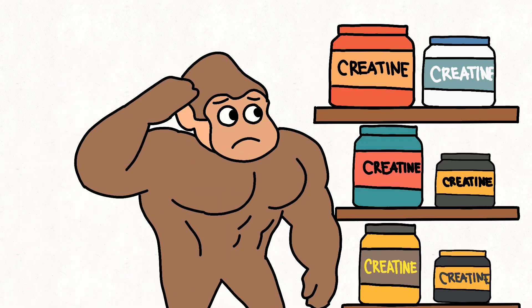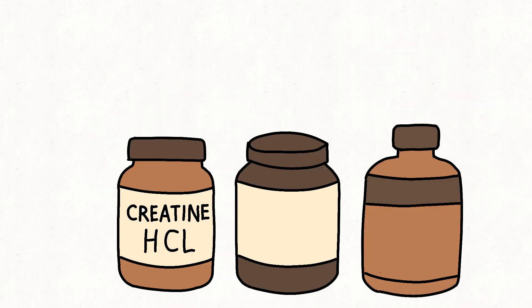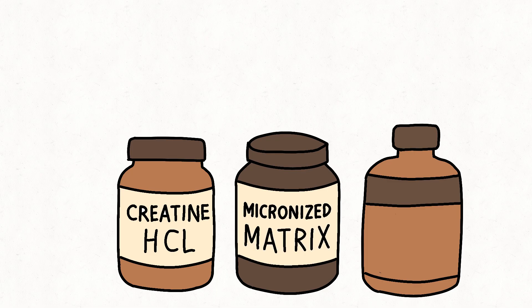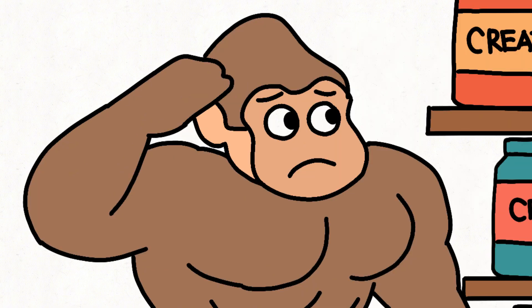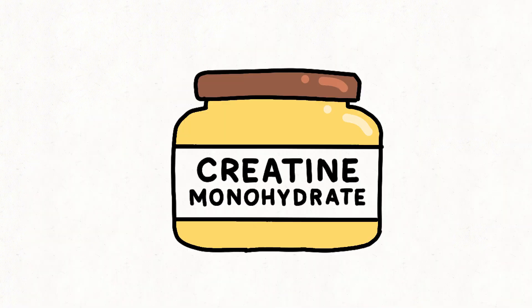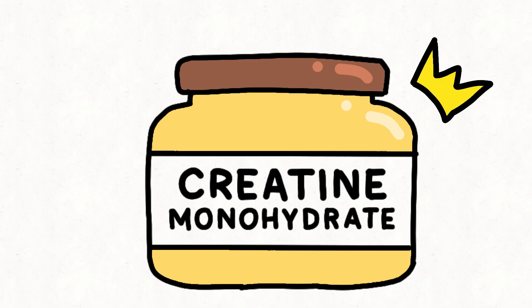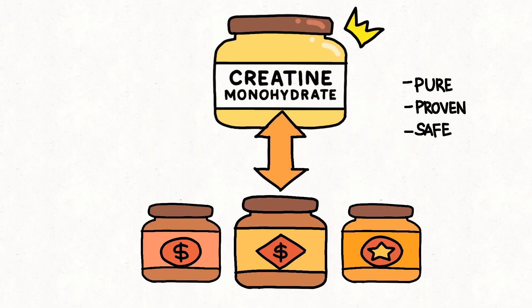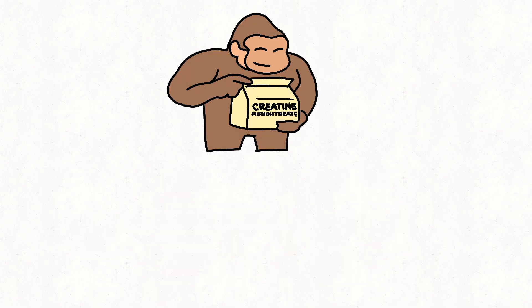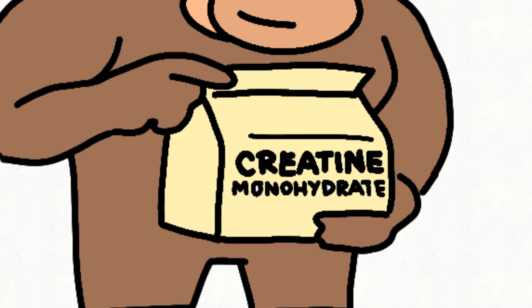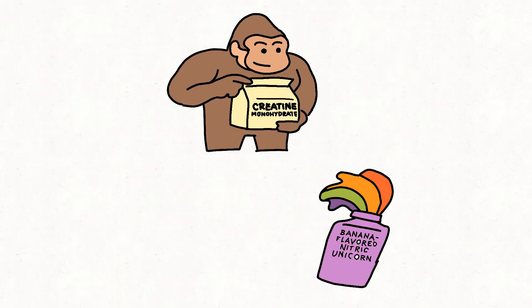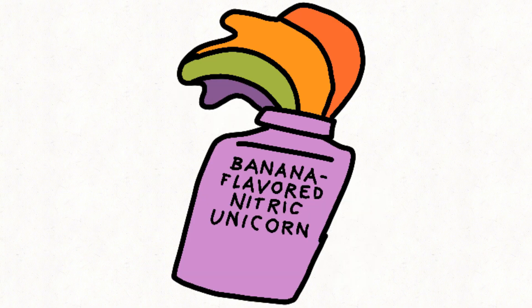Monkey walks into Jungle Store and sees 20 versions of the same white powder. Creatine HCL, Micronized Matrix, Liquid Creatine Ultra Supreme. Monkey is confused. Truth is simple: Creatine monohydrate is king. Cheap, pure, proven, safe. Everything else is just a fancy label with a higher price. Monkey checks the bag. If it says creatine monohydrate, good. If it says banana flavored nitric unicorn, run.